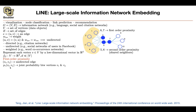Pick two vertices and write down the joint probability between vertex v_i and vertex v_j — say vertex eight and four, or six and seven. You can model this: you have a vector u_i for v_i and another vector u_j for v_j, and you multiply them together.